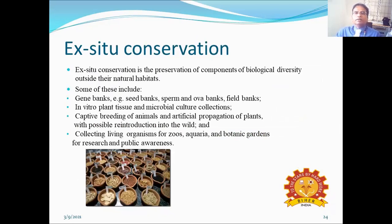Ex-situ conservation is the preservation of components of biological diversity outside their natural habitats. Some of these include gene banks — namely seed banks, sperm and ova banks, field banks, in-vitro plant tissue, microbial culture collections — and captive breeding of animals and artificial propagation of plants with possible reintroduction into the wild. Ex-situ conservation also involves collecting living organisms in zoos, aquaria, and botanic gardens for research and public awareness.